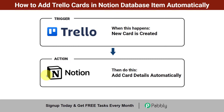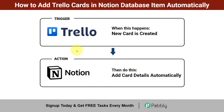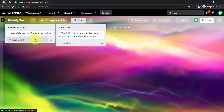The idea here is that as soon as a new card is created in Trello, the same card should be automatically added into Notion as well, along with all task details, so that I don't need to manually copy the details. Both applications should be synced automatically using an automation. If you want to learn this, come with me and I'll show you the whole process step by step.